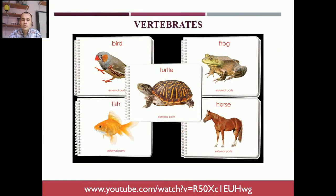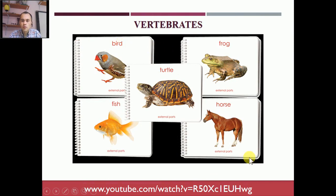So today let's start vertebrates. Vertebrates are classified into five big groups: birds, mammals, fish, reptiles, and amphibians.